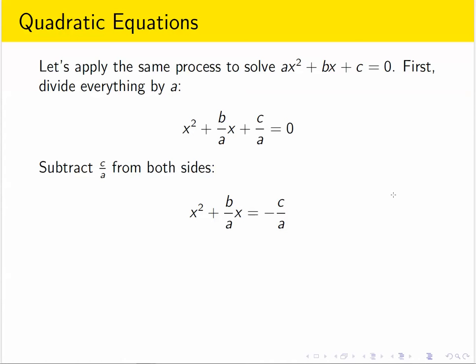And the idea is I'm imagining I know how to factor perfect squares. So what I do is I add something to both sides that makes the left side into a perfect square. In particular, this is b over 2a quantity squared.